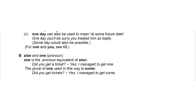A or AN and ONE preceding a pronoun: ONE is the pronoun equivalent of A or AN. For example, 'did you get the tickets? Yes, I managed to get one.' The plural of ONE used in the same way is SOME — 'did you get tickets? Yes, I managed to get some.'